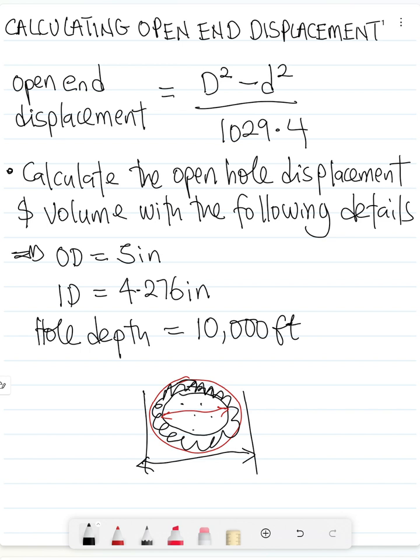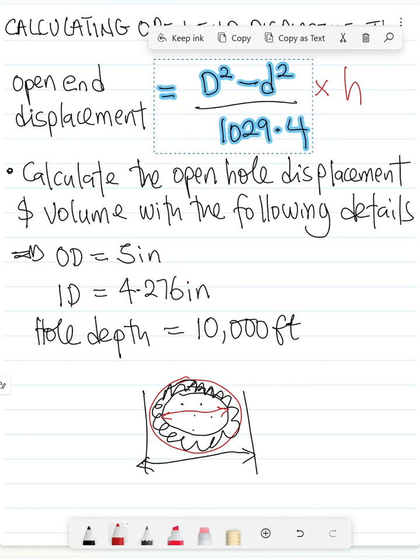Let's look at a quick calculation to calculate the capacity and the volume. The difference between capacity and volume calculation is that you multiply by the height and you get the volume. The open-end displacement can be calculated with this formula; multiply by height to get the volume.